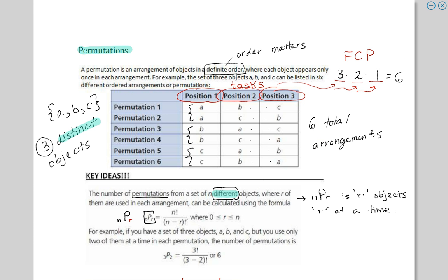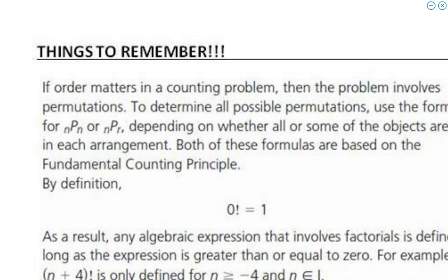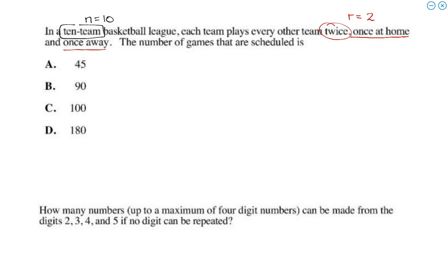A permutation is an arrangement of objects — in this case teams — in a definite order. Is a home game different from an away game? Yes, that order matters. So we write 10P2, which equals 90.